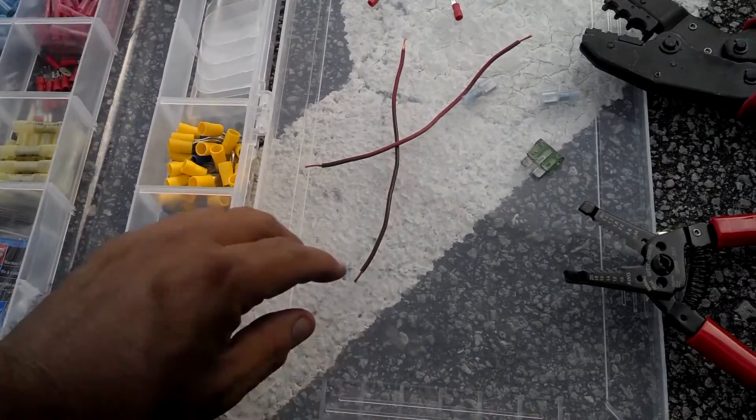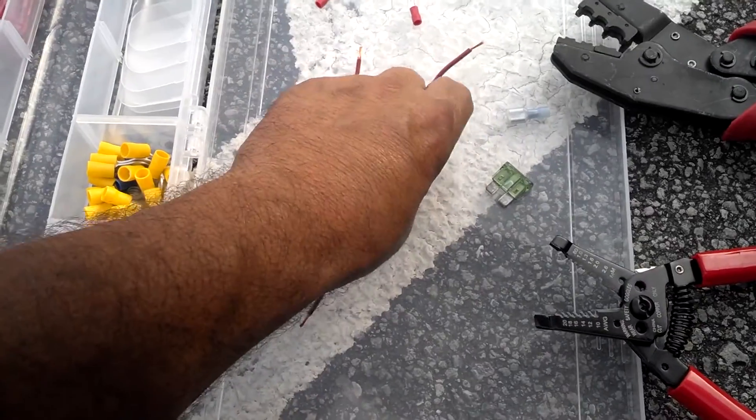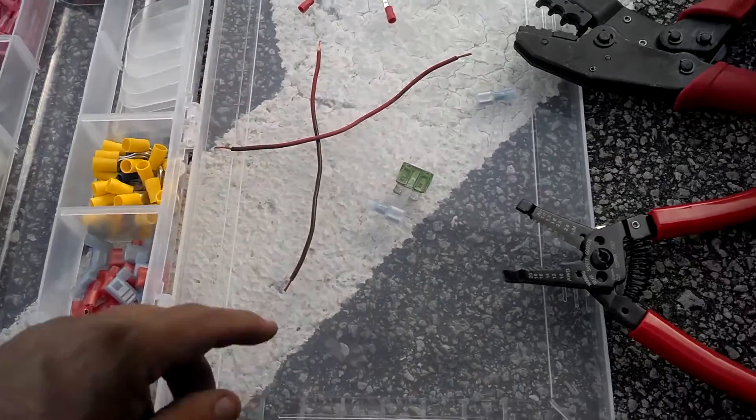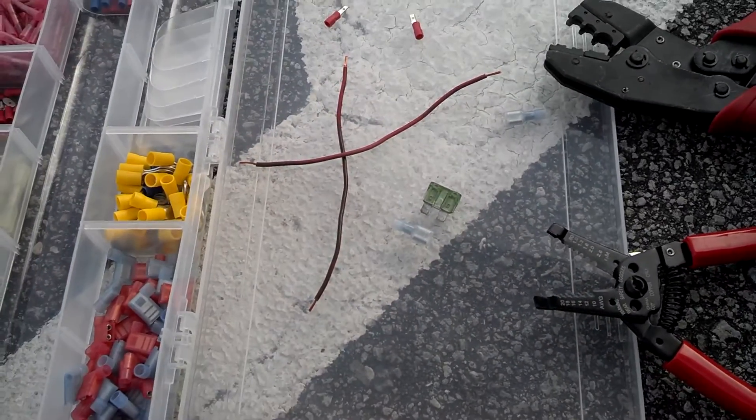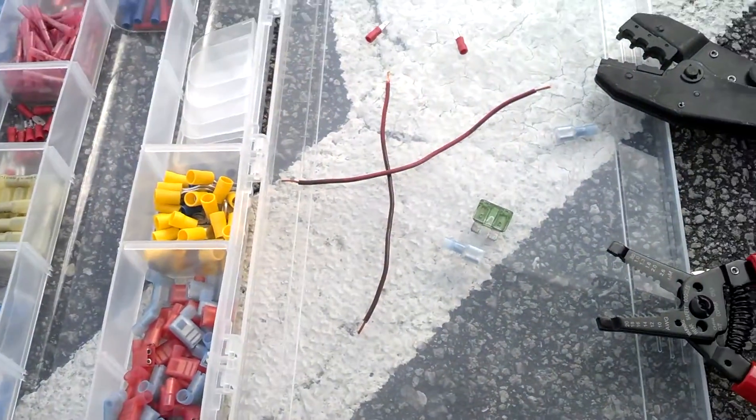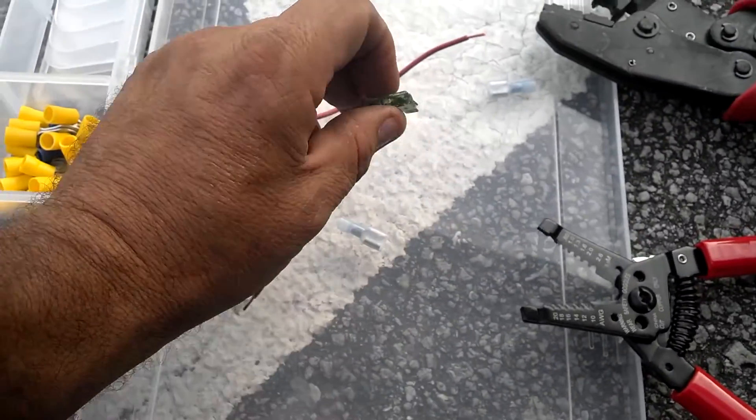So what I'm going to do is take a spade terminal, I guess that's female, and put the fuse into there and clamp it on. Let me go ahead and clamp that real quick because I don't have my tripod out here and I'm working out here improvised. I'll show you how to make a really quick blade fuse holder.